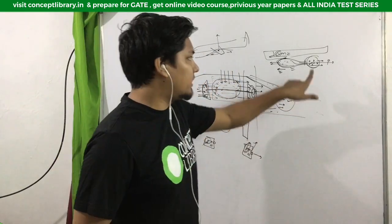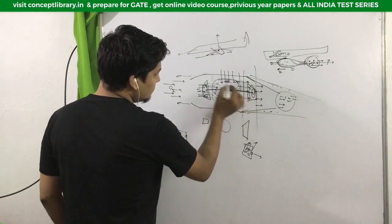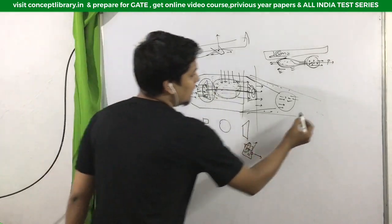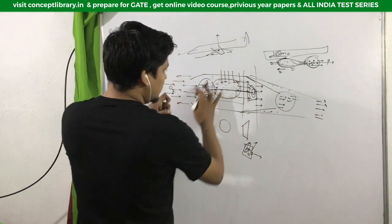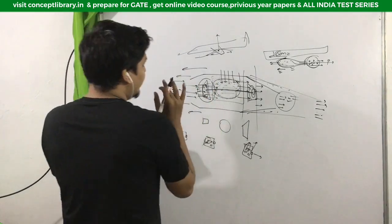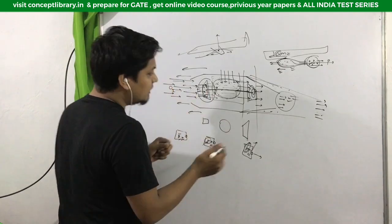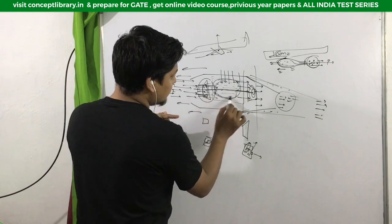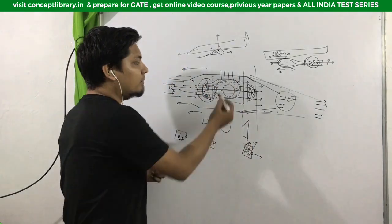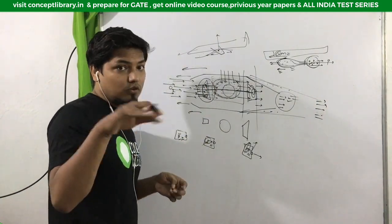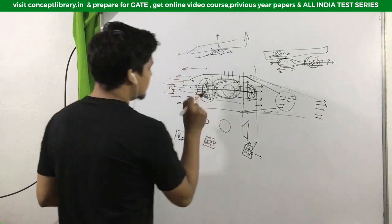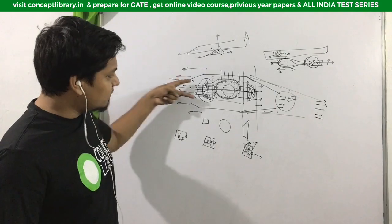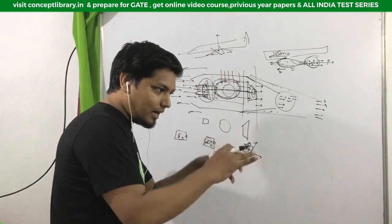Now consider: when the engine produces thrust and the aircraft moves at high speed, air enters the engine at very high speed — this can damage the compressor and compressor blades. Also, once very high speed air reaches the combustion chamber, combustion cannot happen properly because combustion cannot occur at supersonic or hypersonic speeds in practice. So we need to perform subsonic combustion, which means whatever air is entering we have to reduce its speed — bring it from the supersonic region down to subsonic.